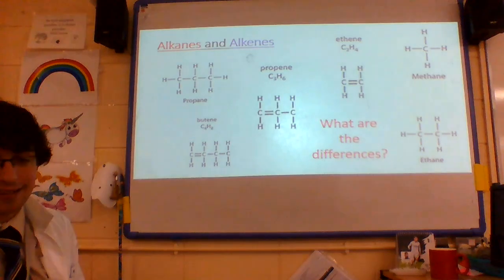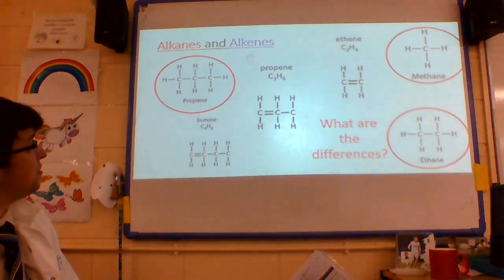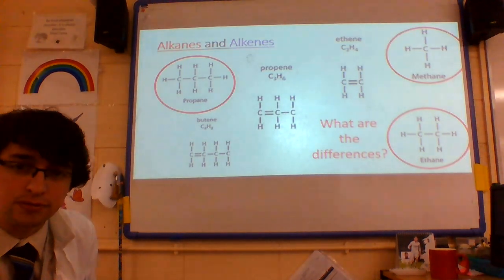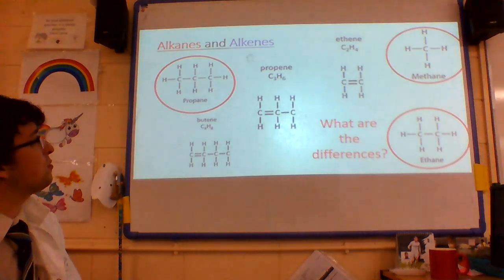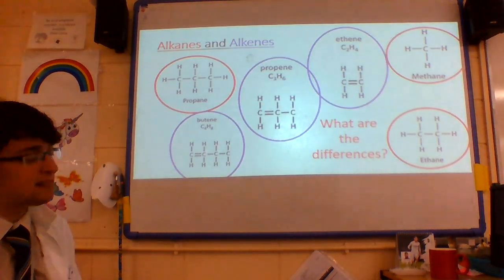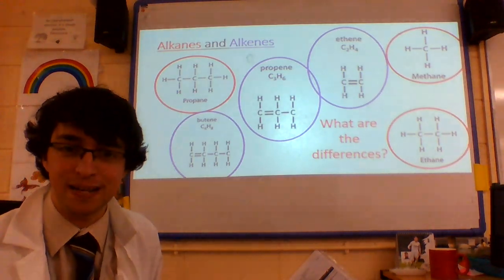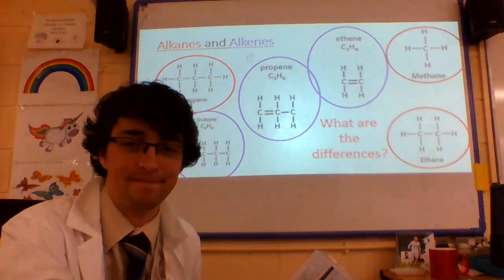Let's look at this image. So which ones are alkanes? Well these ones of course — no double bonds. These ones are alkenes because there is a double bond. How splendid.